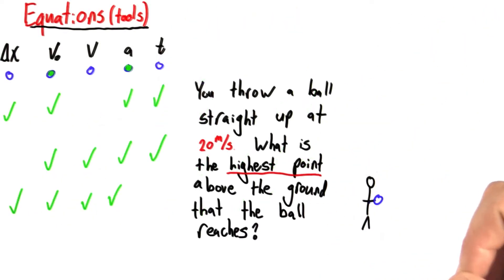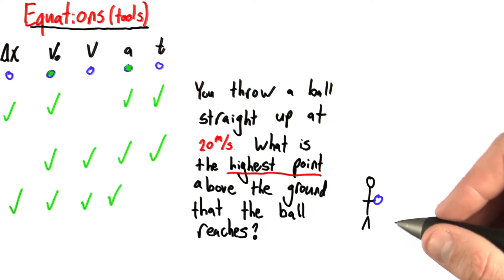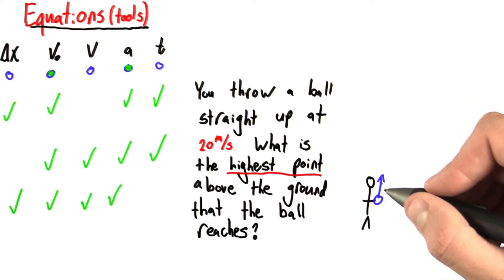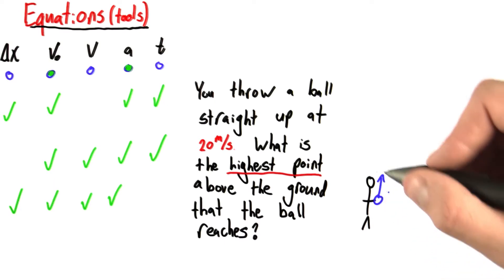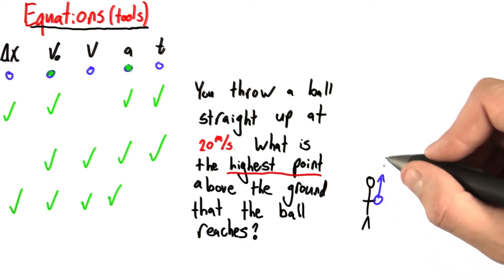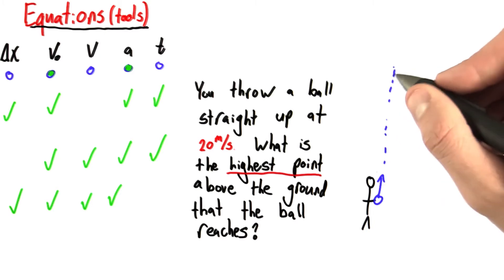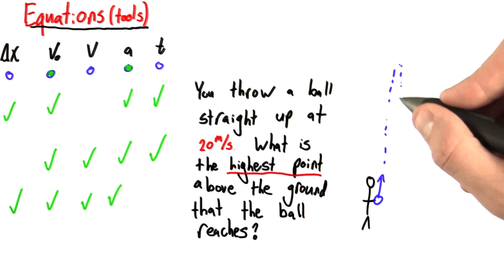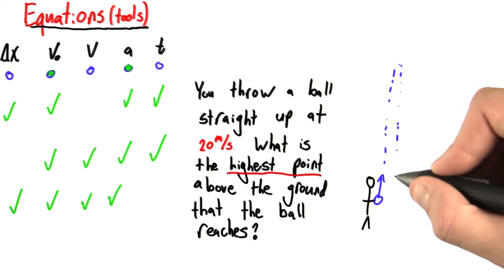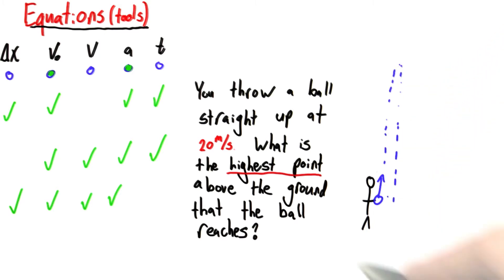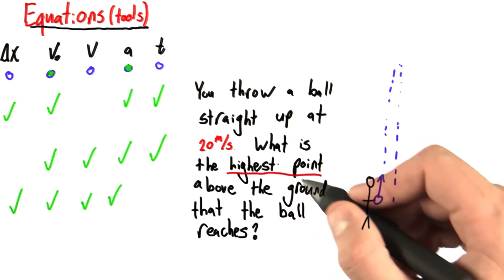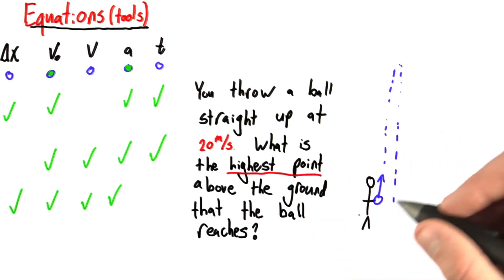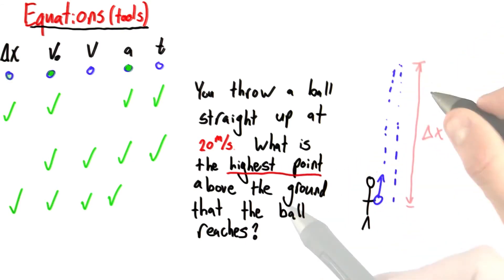Let's draw a picture of what happens when you throw a ball straight up in the air with some initial velocity. Well, it goes up, up, up — eventually it stops and turns around and then comes back down. So this highest point I can see is some sort of change in position.